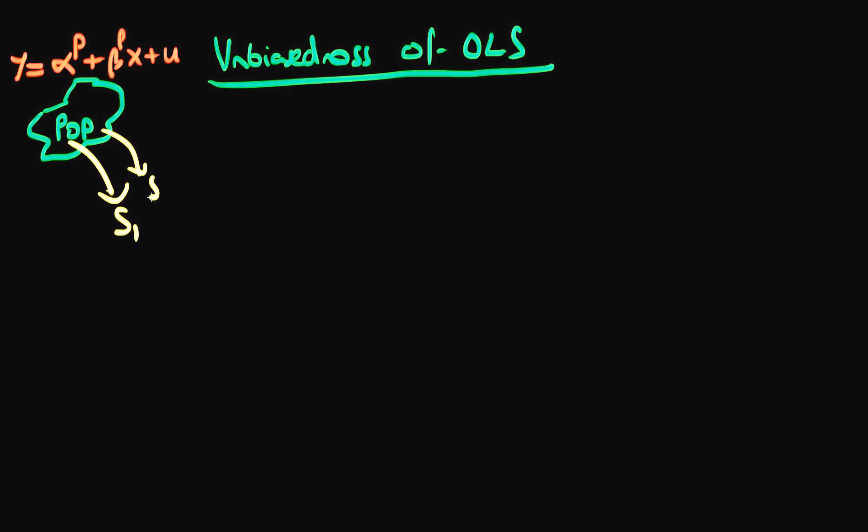s1, s2, all the way through to sn where n is a very large number, and if I apply my estimator to each of these different samples, so I'm applying beta hat OLS to s1, s2 and sn,